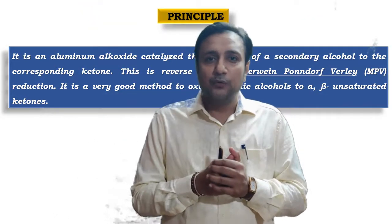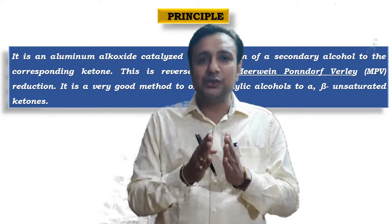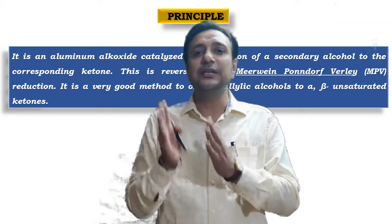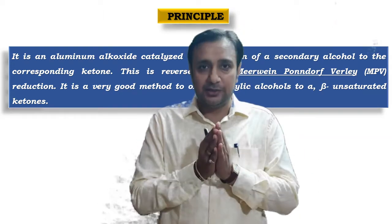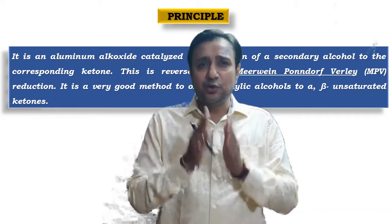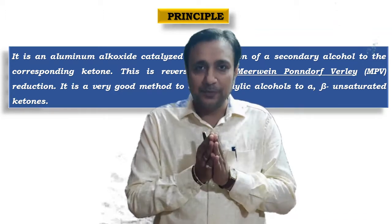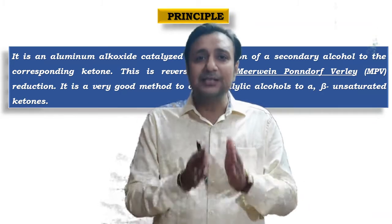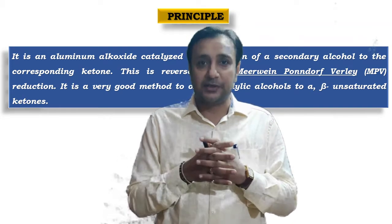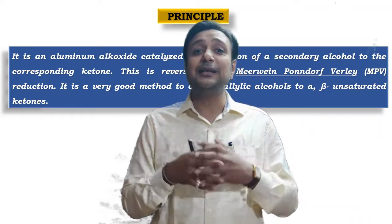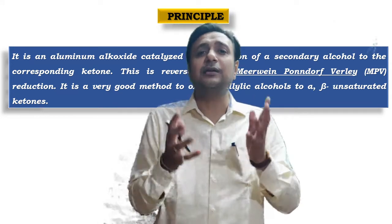The principle of the reaction: it is an aluminium-catalyzed oxidation of secondary alcohol to ketone. The reverse reaction is known as the Meerwein-Ponndorf-Verley reduction, which is also one of the best reductions. This is a very good method to oxidize allylic alcohols to alpha-beta unsaturated ketones. The main application of this oxidation is in the pharmaceutical industry to produce narcotic drugs such as cocaine and codeine, and also to synthesize many steroids. So it has wide application in steroidal chemistry.